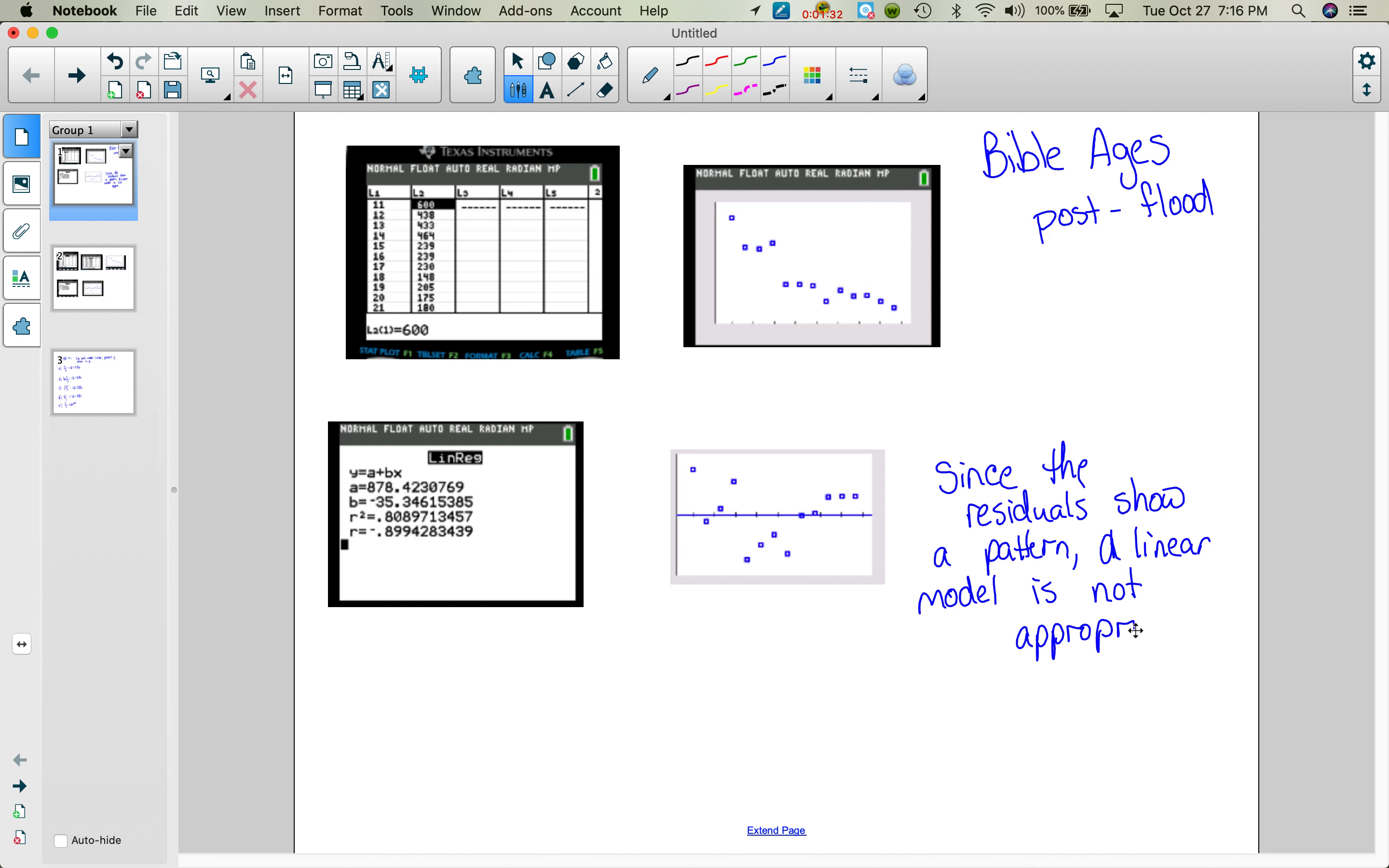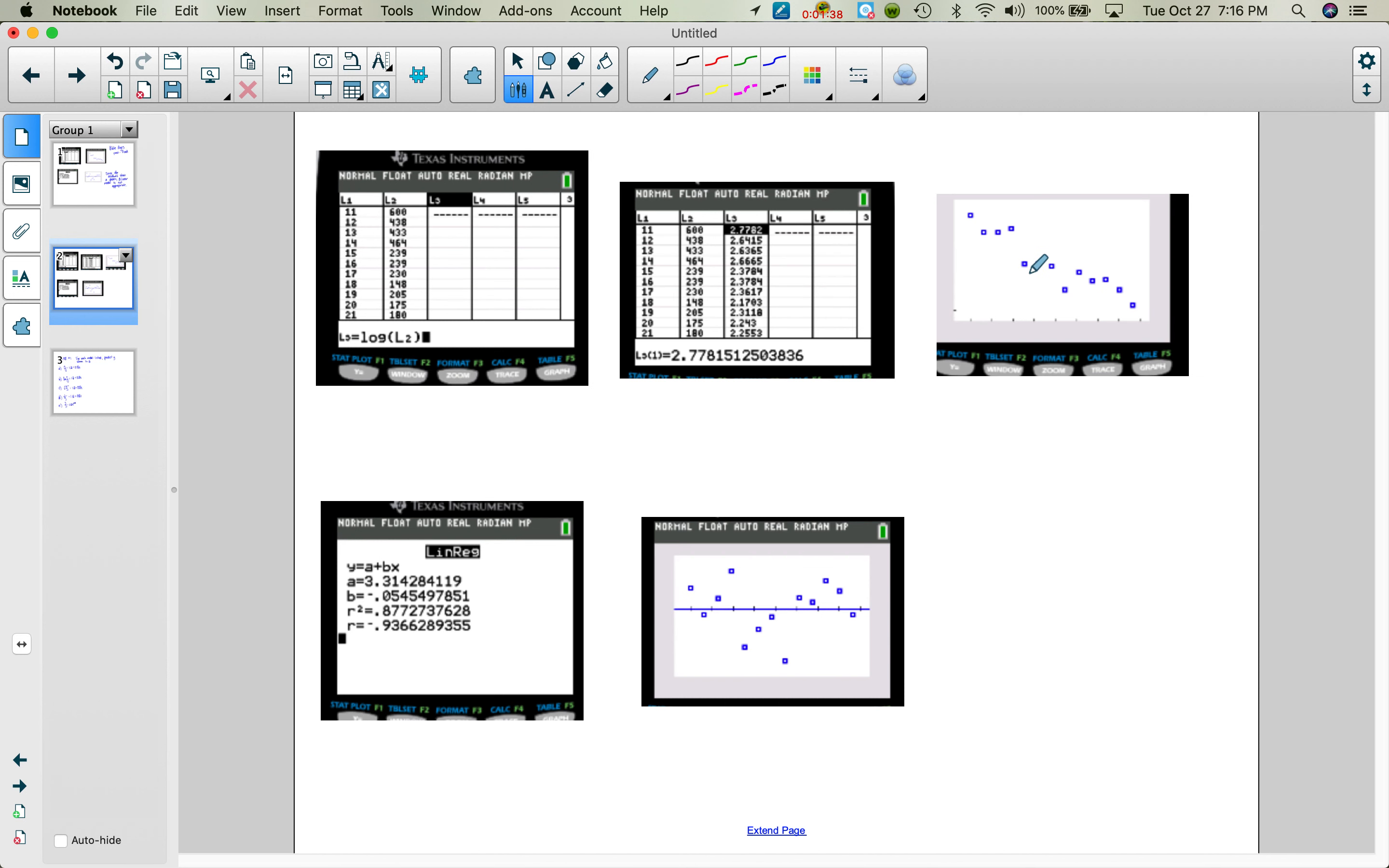So since the residuals show a pattern, a linear model is not appropriate. So then what you do is you try and find something to straighten the data. So what I'm going to show you next, I went over to my L3. So you're going to go over to, and you have to be highlighted on the L3. And then down below I typed in log of L2. Now I could have done natural log. I chose to do log. The only difference that's going to make is what I do to undo my equation. So if I'm using common log, then I'm going to exponentiate with a base of 10. If I had used natural log, then I would exponentiate with a base of E. It doesn't matter what you choose. So then when I did that, it filled in this column for L3.